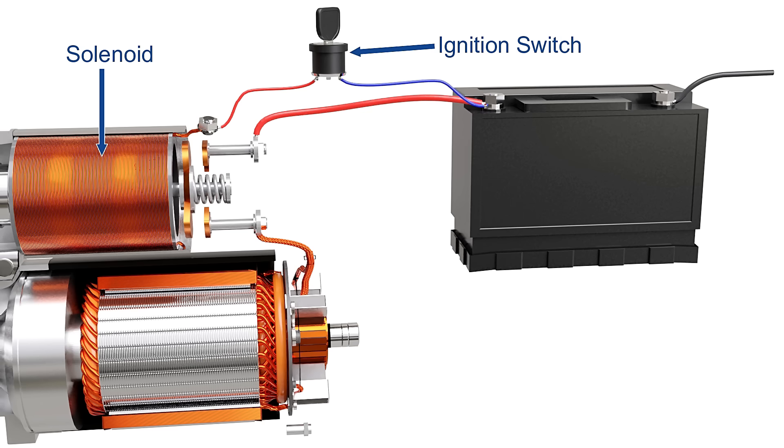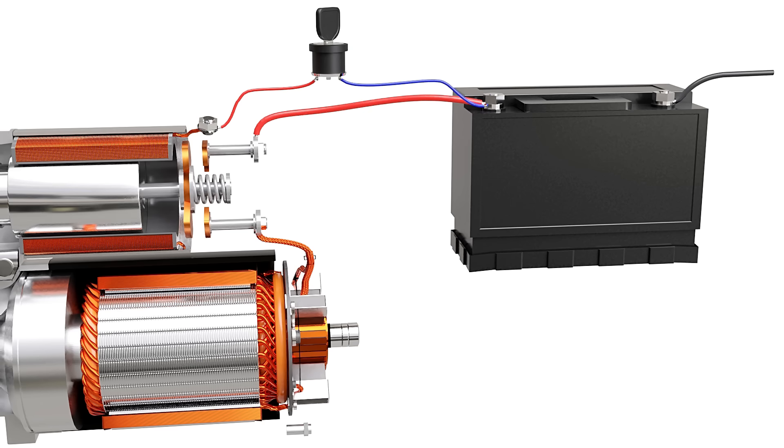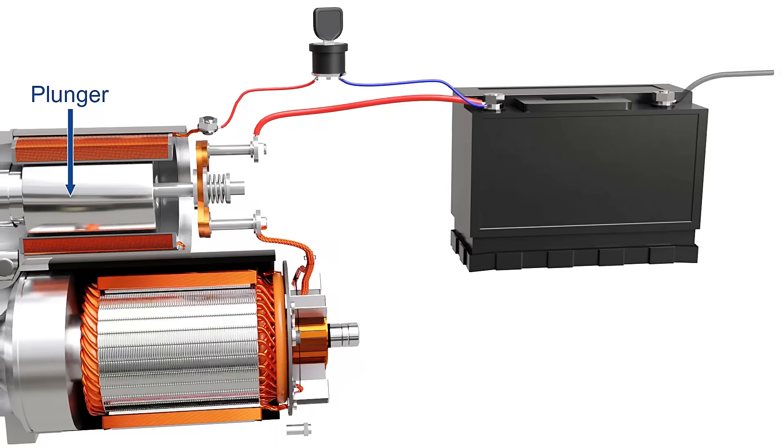The solenoid is an electromagnet which requires small current to get energized. As the ignition switch is turned on, the solenoid gets energized. A moving core known as a plunger slides along the coil, which connects two copper terminals of a contactor switch. This completes the circuit from the battery to the motor and causes the rotor to spin.